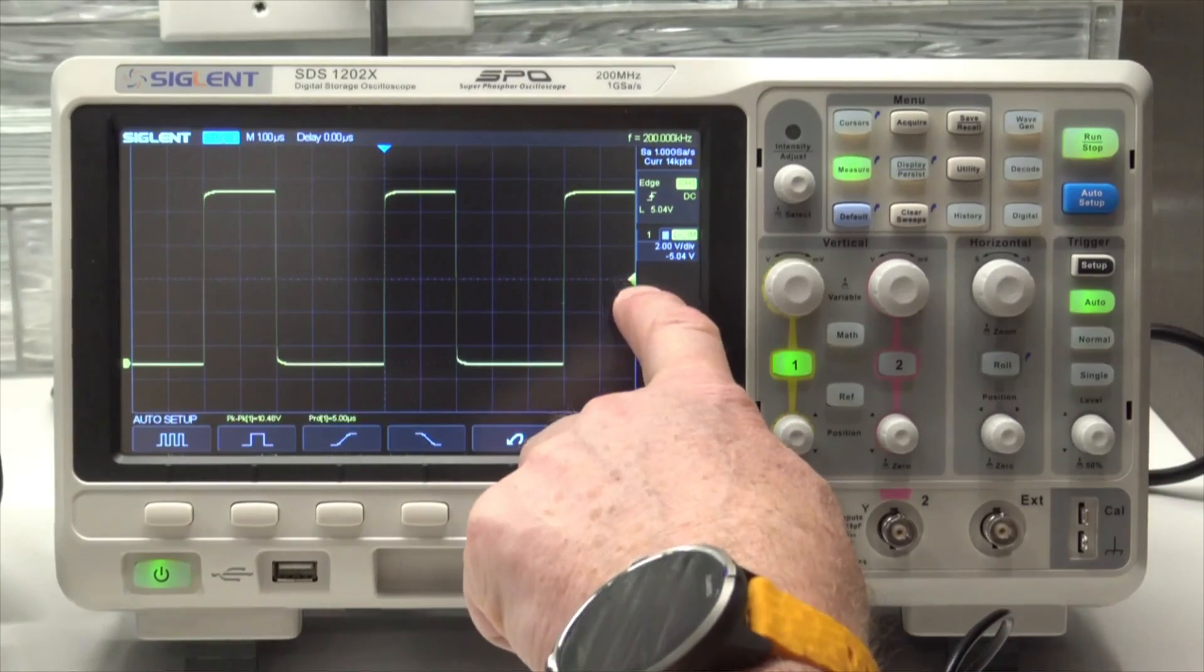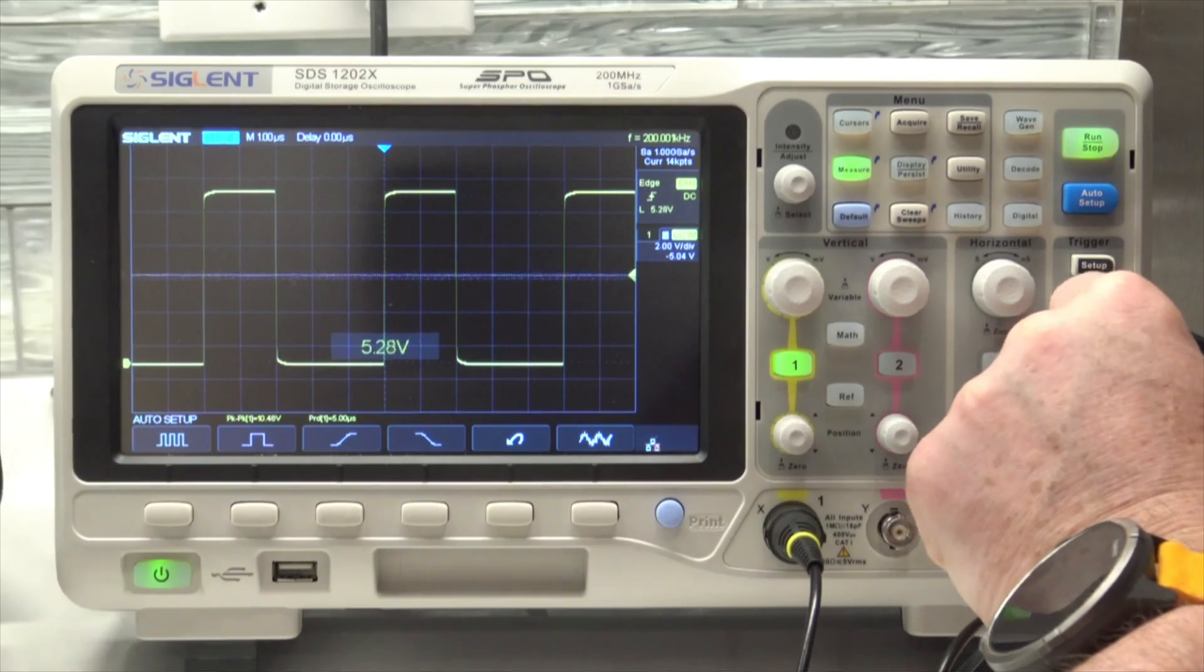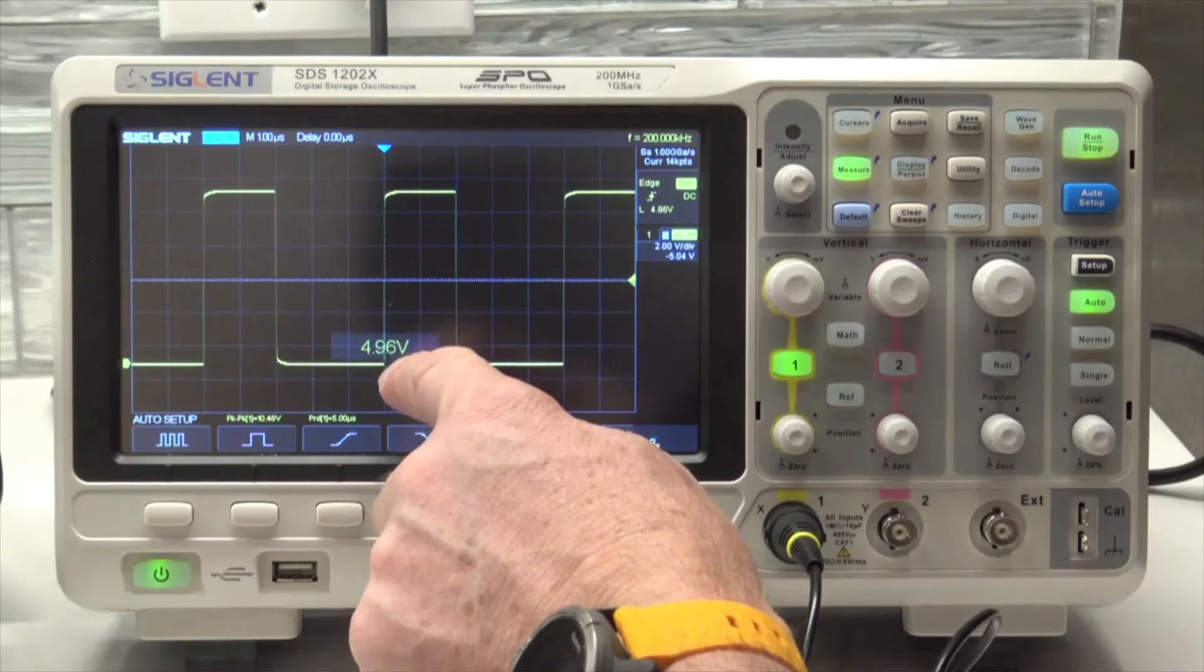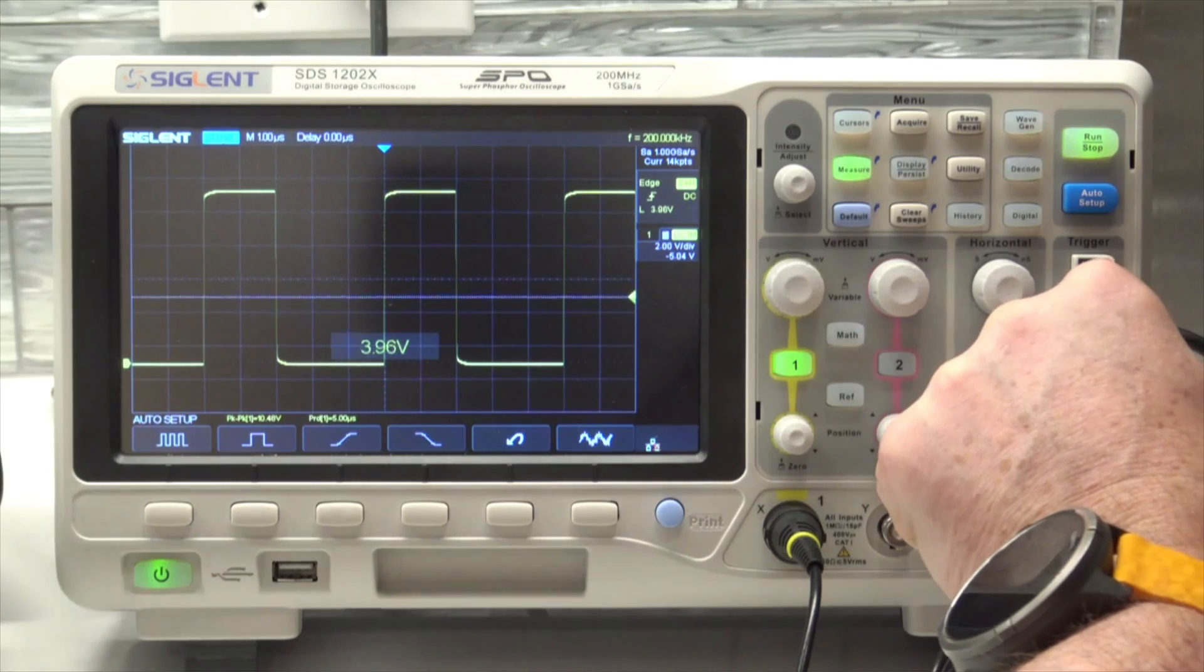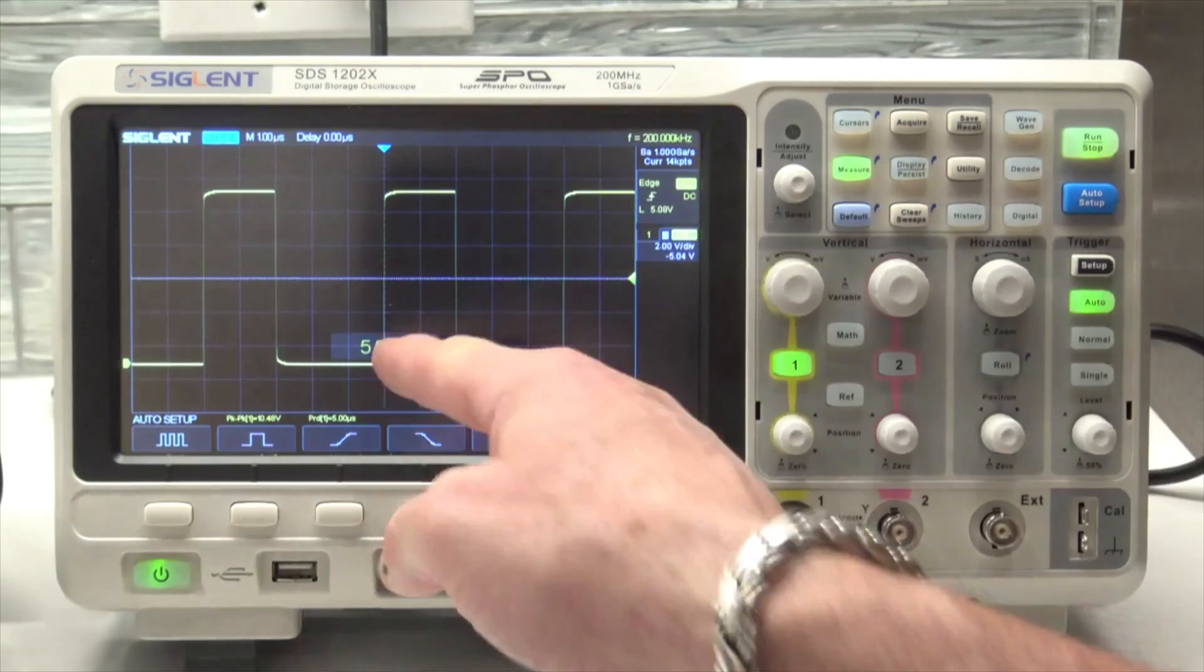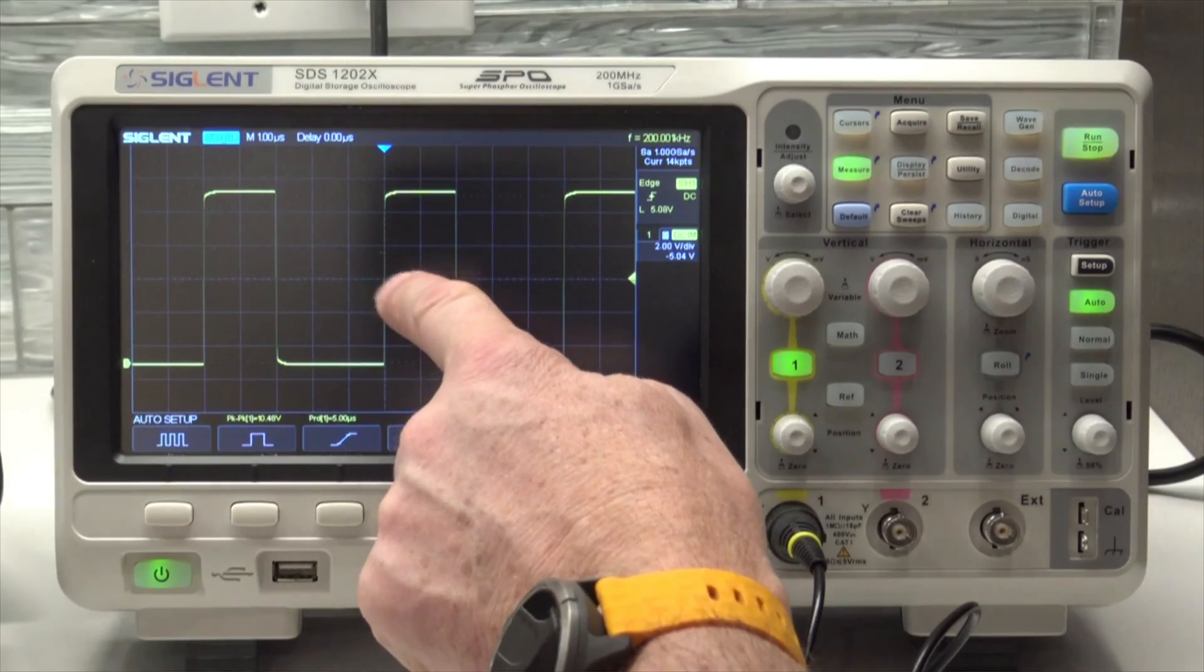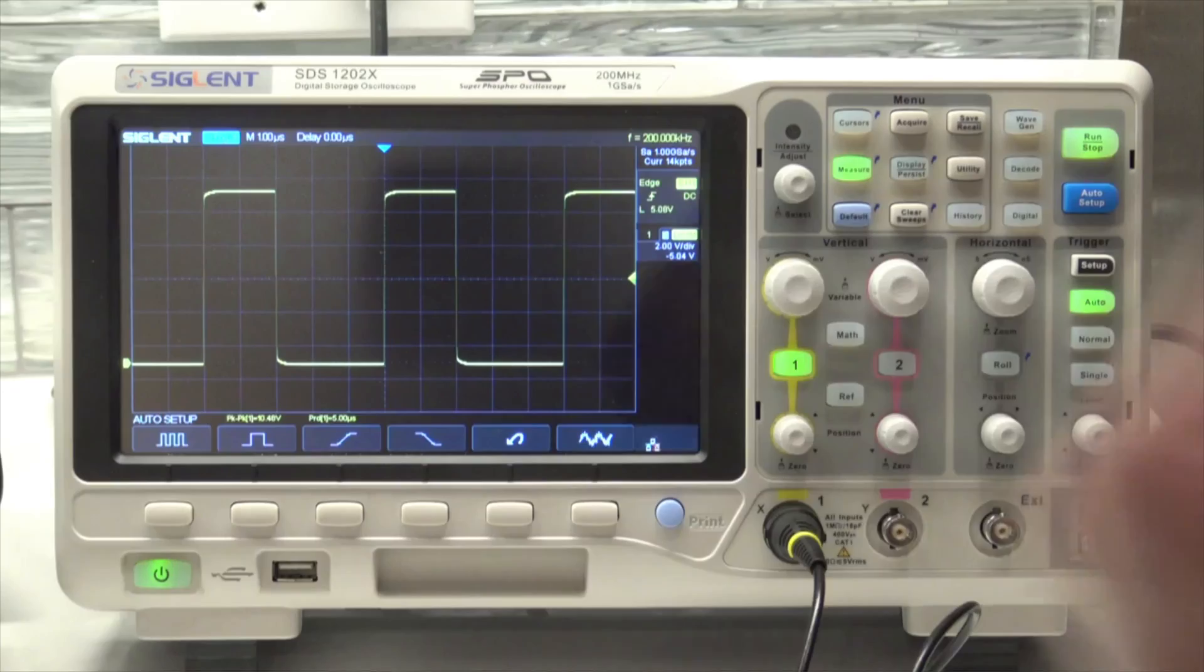The triggering is at the center of the scale, the level here. When you start moving this around, it shows you the little line where you're actually triggering and gives you the voltage. Now it's at 5 volts. If I push this in, it'll go to the 50 percent point. On the horizontal time scale, it's triggering also in the center grid. These are the two trigger points: level and time.